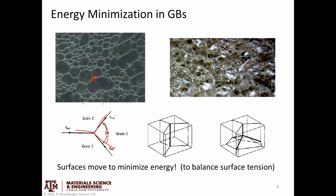We can view this as there basically being tension in all of these directions, and because it's the same in each of the three portions, that results in 120-degree angles. Similarly, in three dimensions, the internal angle between edges is the angle seen inside a tetrahedron — 109.5 degrees. Surfaces move around and adjust to minimize the overall energy, and when surfaces are all equal, we tend to have equal angles. But in real materials, we have different kinds of grain boundaries, so these angles are not always equally spaced.